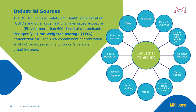The U.S. Occupational Safety and Health Administration, or OSHA, and other organizations have issued exposure limits for more than 600 chemical contaminants that specify a time-weighted average, or TWA, concentration. The TWA contaminant concentration shall not be exceeded in any worker's personal breathing zone. Industrial contaminants can exist in such diverse workplaces as mines and quarries, pharmaceuticals, medical facilities, and construction or demolition sites.